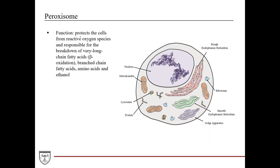Peroxisomes protect cells from reactive oxygen species, which are a major cause of inflammation and damage within the cell, so it's important to control them. Peroxisomes also play a crucial role in the breakdown of very long chain fatty acids via beta oxidation, as well as breakdown of branched chain fatty acids, amino acids, and ethanol.